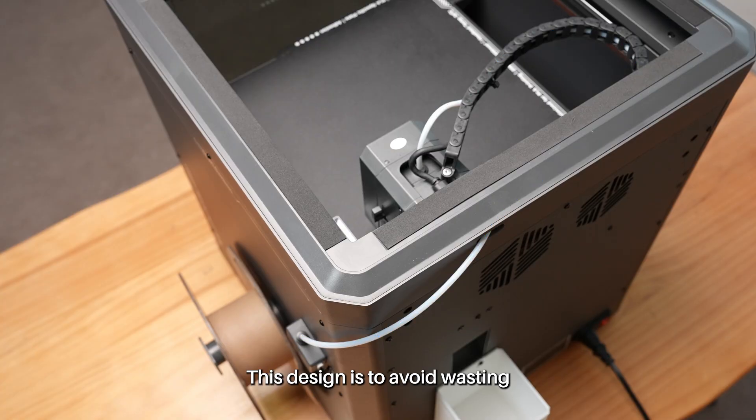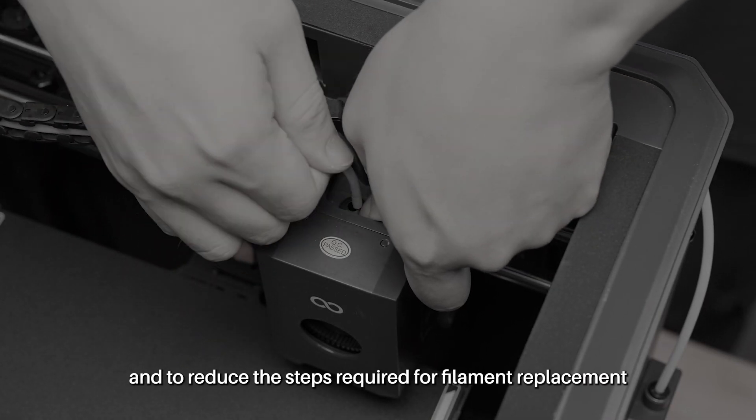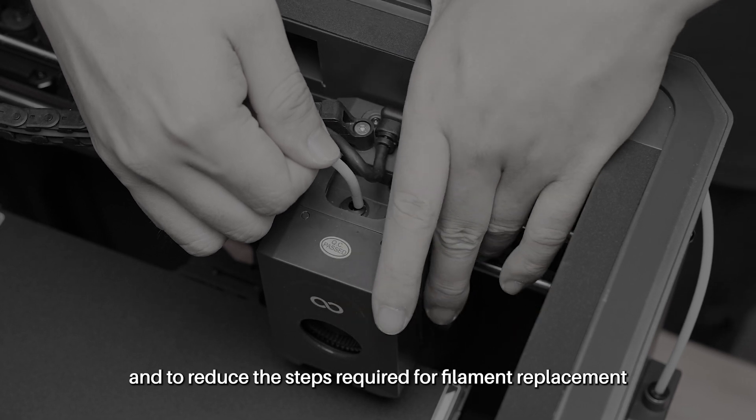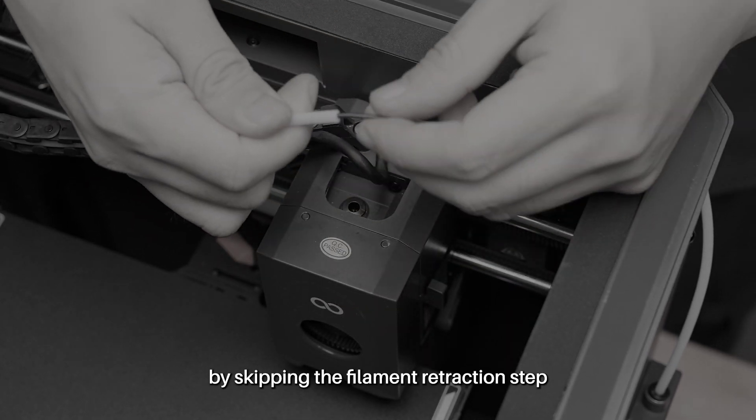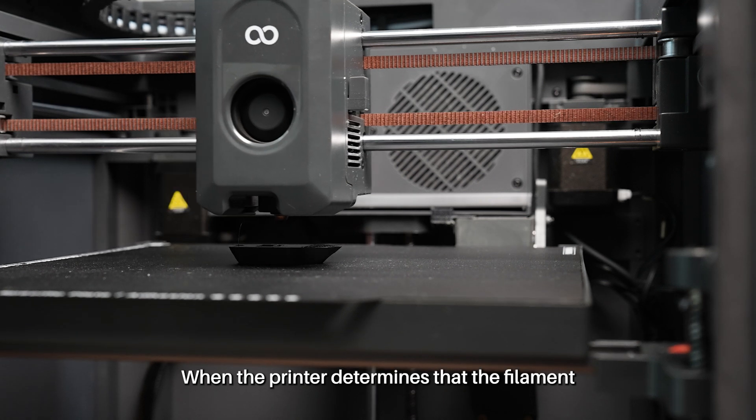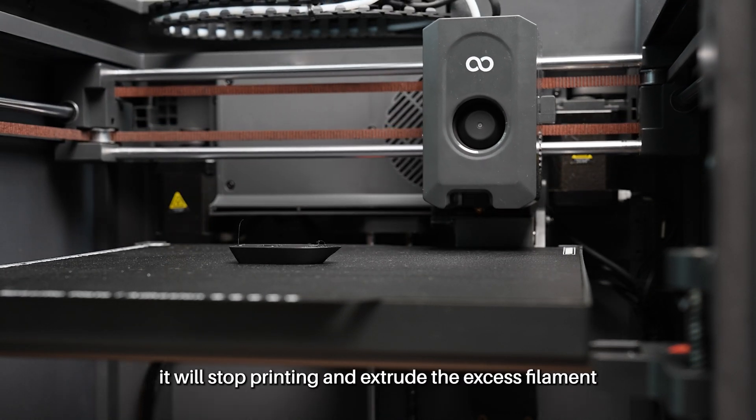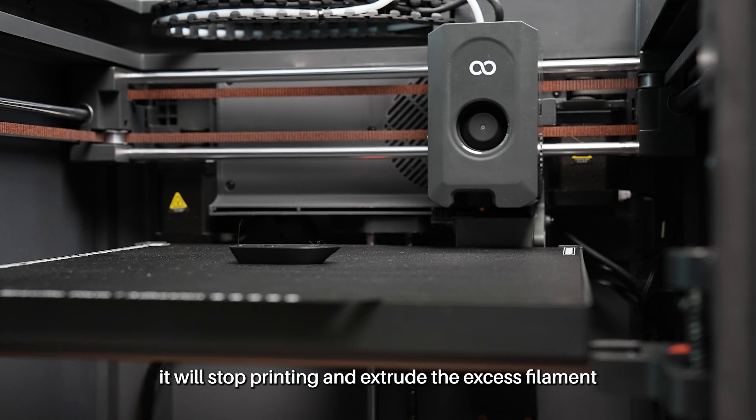This design is to avoid wasting the filament inside the guide tube and to reduce the steps required for filament replacement by skipping the filament retraction step. When the printer determines that the filament in the guide tube is almost exhausted, it will stop printing and extrude the excess filament.